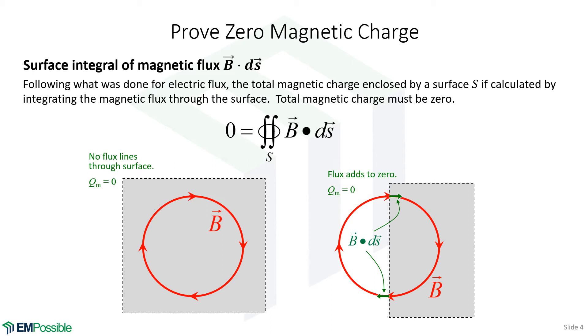And a little bit harder to see when there's more complicated fields. But essentially, since the magnetic field is forming loops, the flux still always adds to zero because there'll be just as much positive flux as negative flux.